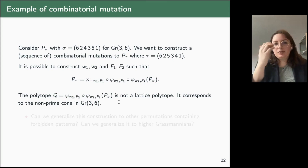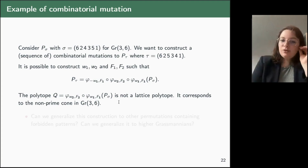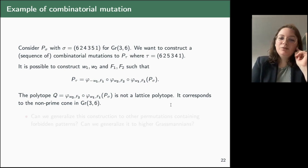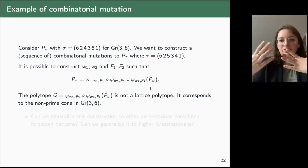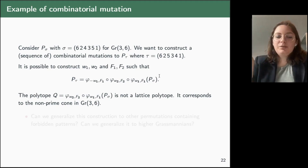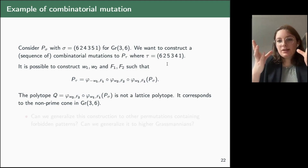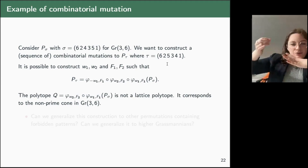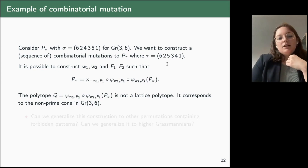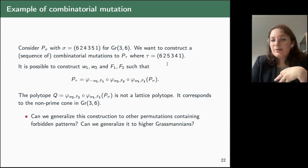Interestingly, the polytope obtained after these two mutations has one extra vertex — not a lattice point, but one-half the sum of two lattice points. This polytope corresponds to the hexagonal cone in the tropicalization of Gr(3,6), which lies in a non-prime cone. The non-prime cone corresponds to a polytope of smaller volume, so we need to add this rational point to get the right volume. The question remains: does this construction work for other permutations with forbidden patterns, and can we generalize to higher Grassmannians?